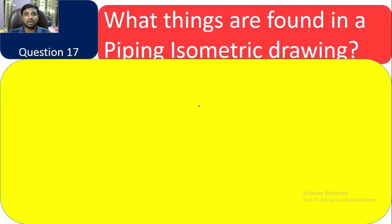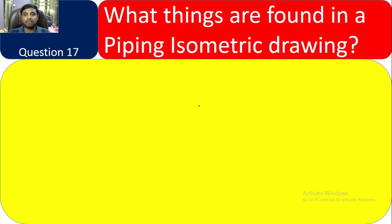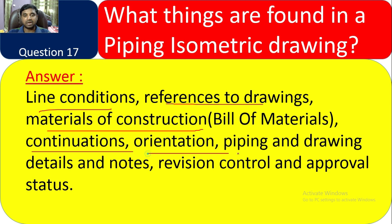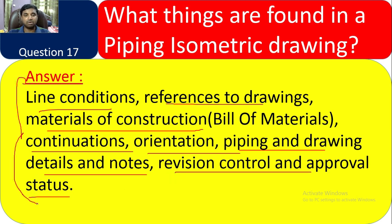Question 17: What things are found in a piping isometric drawing? You check the following: line condition, reference to drawings, materials of construction, continuation (orientation), piping and drawing details and notes, and division control and approval status. These are what you will find and check in your isometric drawing.